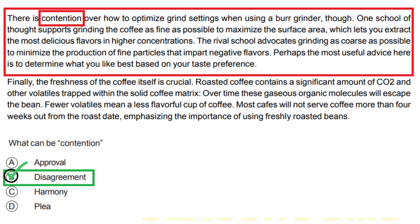According to the given paragraph, option B is correct because contention means disagreement. The paragraph states that there is contention over how to optimize grind settings when using a burr grinder. This indicates that there are differing opinions or disagreements regarding the optimal grind settings. Therefore, option B accurately reflects the meaning of contention.